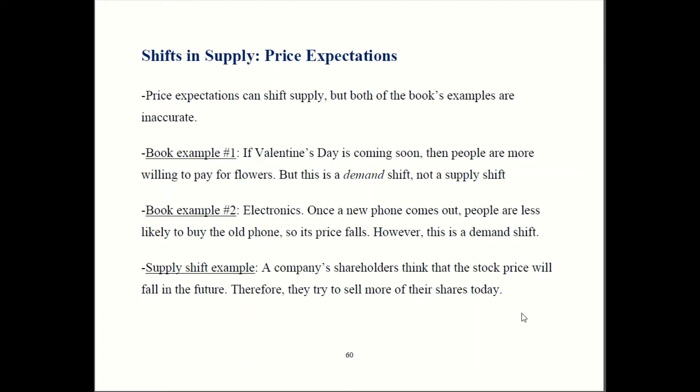So to clear up some confusion here, I think your book's examples are a bit inaccurate. So your book talks about if Valentine's Day is approaching, then people have a larger willingness to pay for flowers. But actually that's not a supply shift. That's a demand shift. The people buying flowers are on the demand side. Suppliers are the ones who are producing flowers. So that's not a supply example.